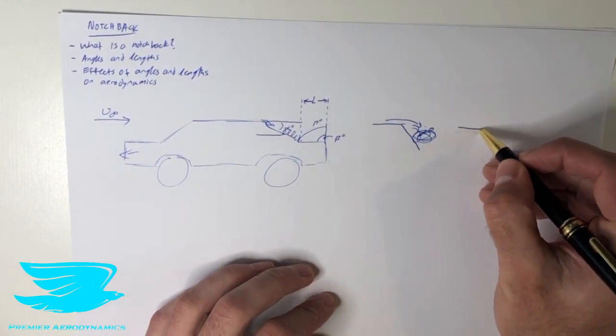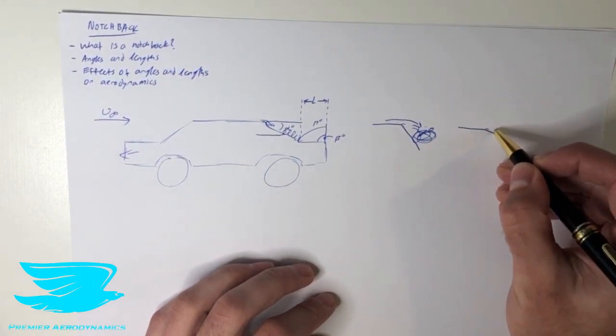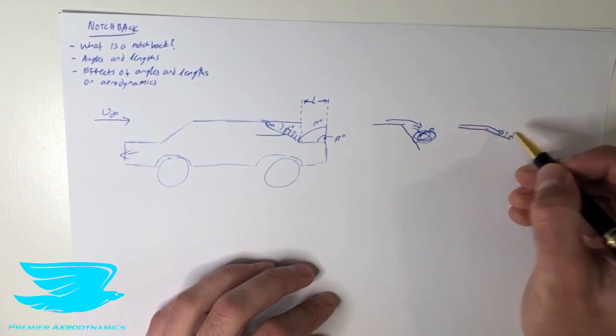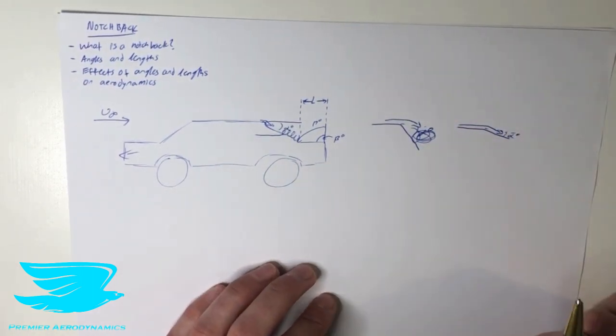Alternatively, we can make it significantly shallower. So that's alpha now. The flow will come along, and it will stay attached happily. And that means that we can reduce the drag.